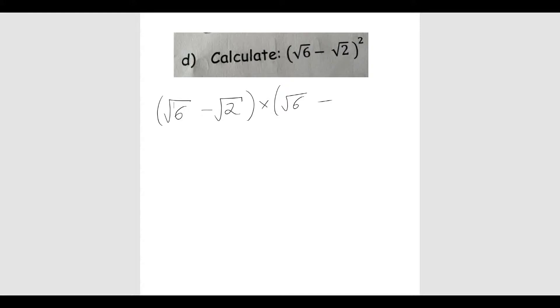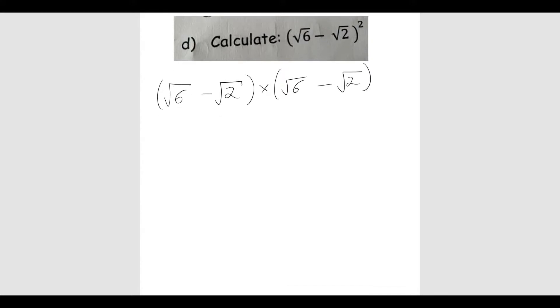So we're going to do the square root of 6 take away root 2, times root 6 take away root 2. And what we're going to do is use FOIL. So FOIL means first I multiply the first term in the first bracket by the first term in the second. So I will have root 6 times root 6, which is just 6.